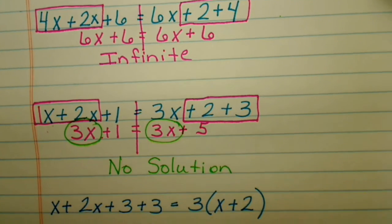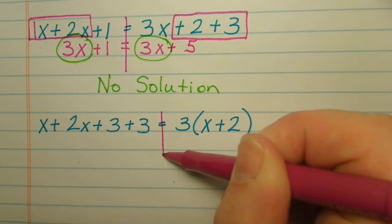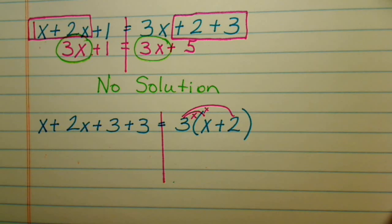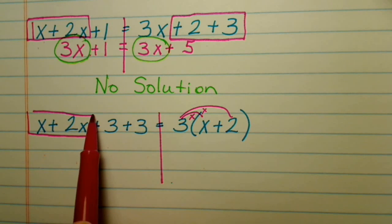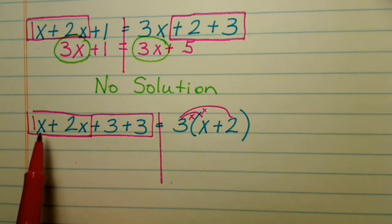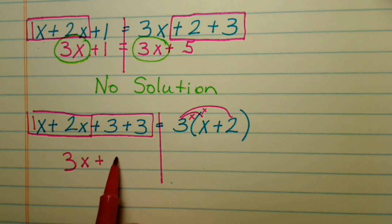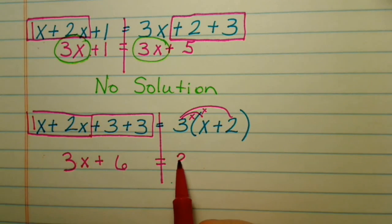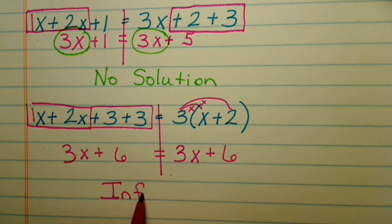Last example. This one gives us step one and step two together. Step one is the distributive property, which we apply on one side. Step two is to combine like terms — we can combine these like terms and these. 1x plus 2x is 3x, and 3 plus 3 is 6. On the other side, do the distributive property: 3 times x is 3x and 3 times 2 is 6. We have the same thing on both sides, so it is infinite solutions.